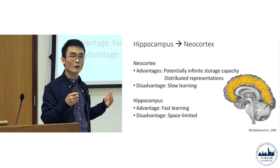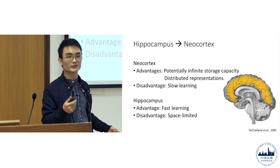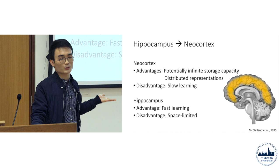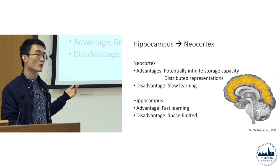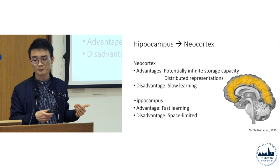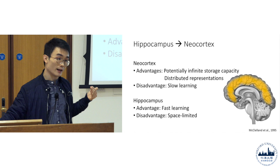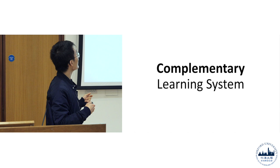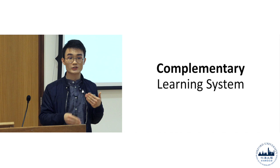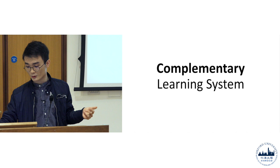In contrast, the hippocampus is extremely fast — it is a very fast learner. For example, if I asked you to remember that one plus one equals six, you wouldn't have any problems remembering that because the neurons in the hippocampus are relatively more flexible in terms of learning new information. But the problem with the hippocampus is that it is space limited — you can't store too much information there. That is why we need the neocortex and the hippocampus to form memories together, and this is what neuroscientists refer to as the complementary learning system — in a sense, they complement each other.